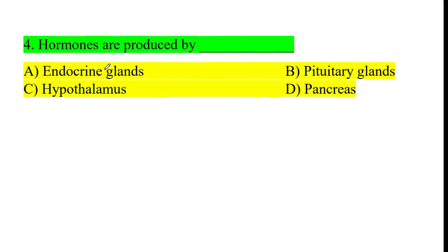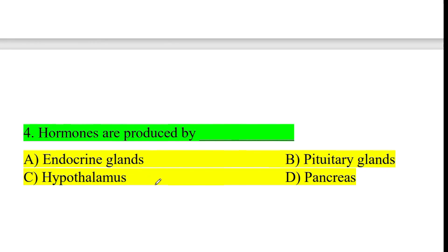Fourth question: hormones are produced by endocrine glands. The answer is option A — hormones are produced by endocrine glands.